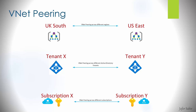VNet peering gives you quite a bit of flexibility. You can peer virtual networks across different regions — for example UK South and UK East. You can also peer across different Azure Active Directory tenants, so between Tenant X and Tenant Y. And you can do VNet peering across completely different subscriptions — Subscription X and Subscription Y — absolutely fine as well. It doesn't matter if the VNets are in different regions, different tenants, or different subscriptions.